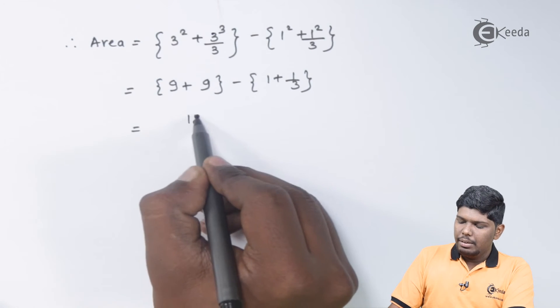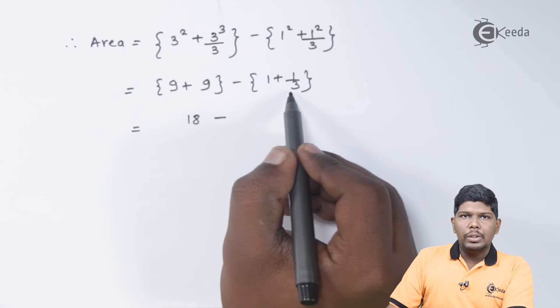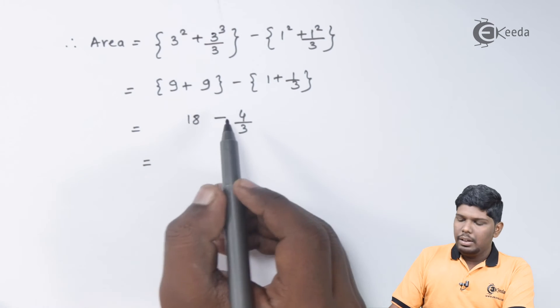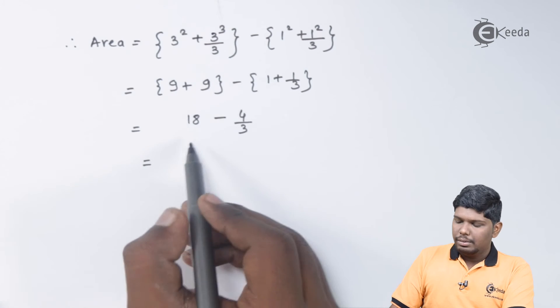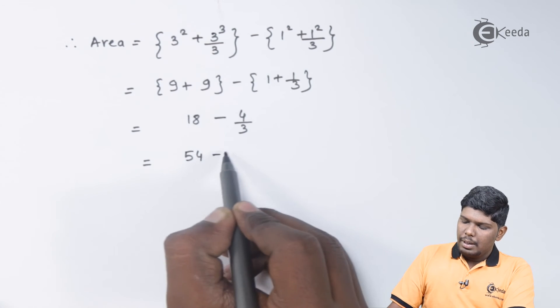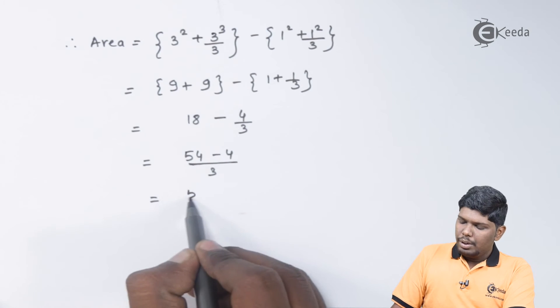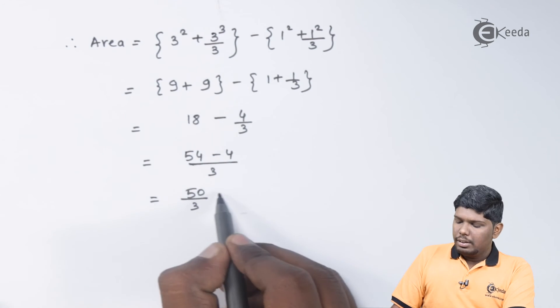9 plus 9 will give you 18. 1 plus 1 by 3 will give you 4 by 3. On further solving, we have 18 threes are 54 minus 4 upon 3. That will give you 50 upon 3 square units.